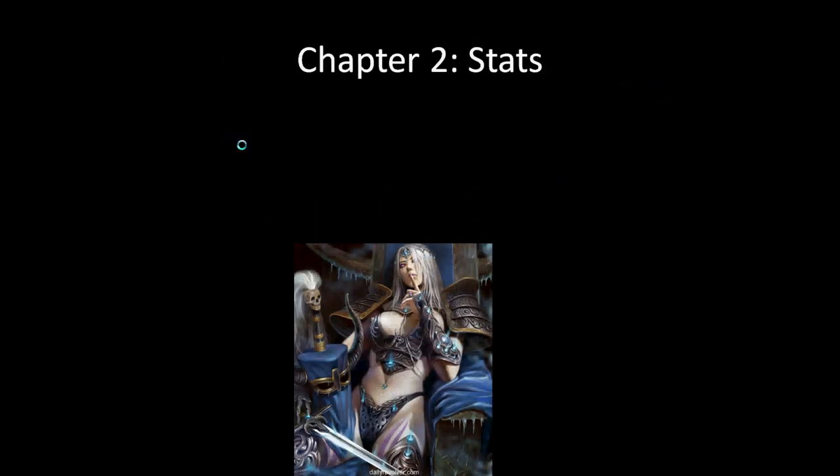Stats are basically what creates your character. It's their skills, their abilities — it's everything. It's the backbone of your character. Ten is the average number. D&D has basically set ten to be the average for what a normal standard human being is. A normal standard human has ten strength, ten dexterity, and so on — but that's basically the basics behind what the stats are.